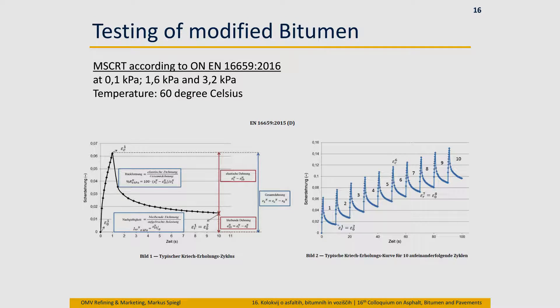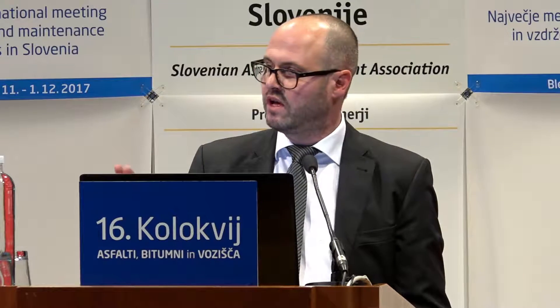MSCRT — you've seen these curves before. We did tests on three different stress levels: 0.1 kPa, 1.6 kPa, and 3.2 kPa at 60 degrees. For paving-grade bitumen — a very simple answer — you don't have to apply these test methods. It makes no sense; you don't get additional information. Just stay with penetration and softening point. This is still good for the first description of this product. You see no elastic recovery. No surprise — this we expected. Everything else would give us a sign that the test method is not the proper one.